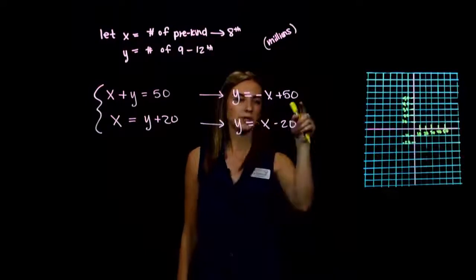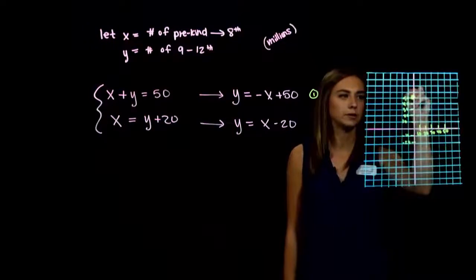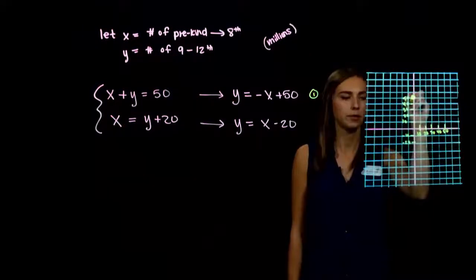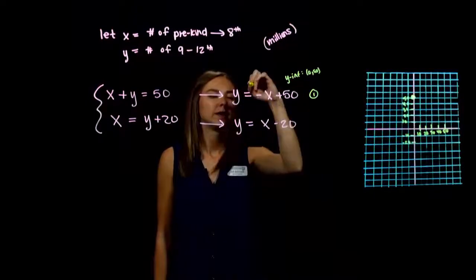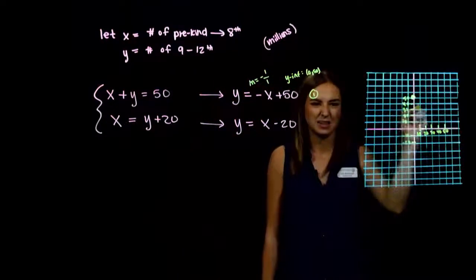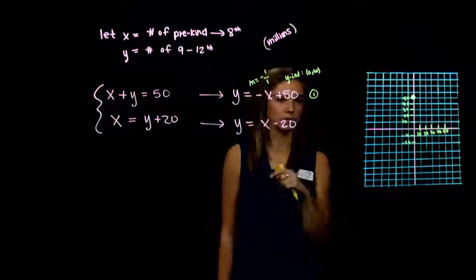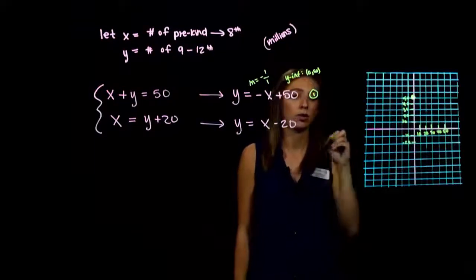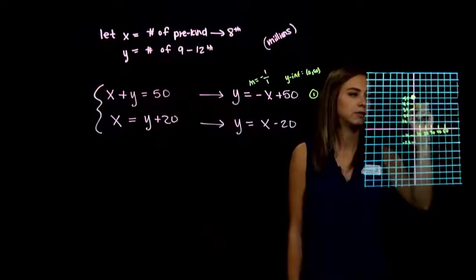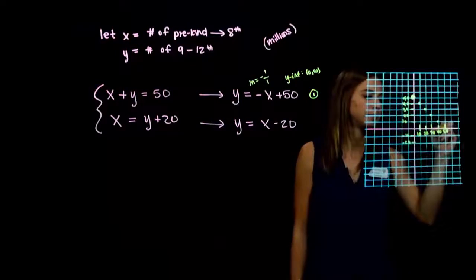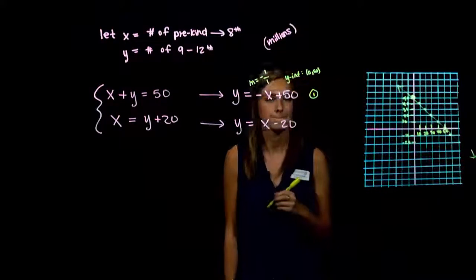Graphing equation 1: the y-intercept goes through (0, 50). Because our scale has each tick worth 10, instead of moving down 1 over 1, we move down 10 over 10 repeatedly. We plot points and connect them to complete the first line.